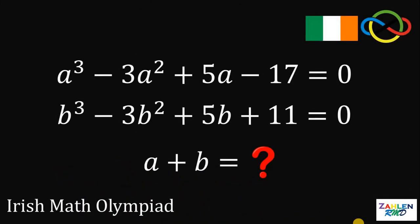Solve for the value of A plus B given that A cubed minus 3A squared plus 5A minus 17 equals 0 and B cubed minus 3B squared plus 5B plus 11 equals 0.